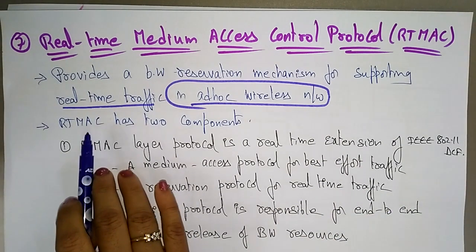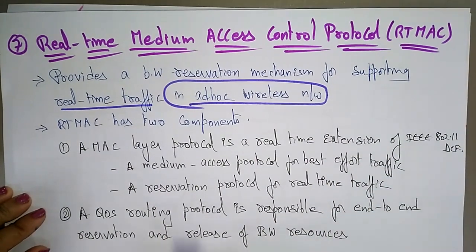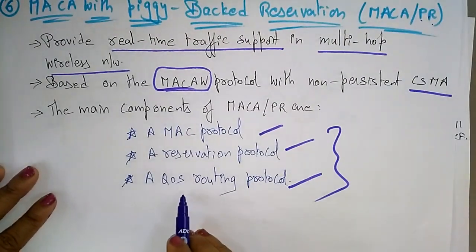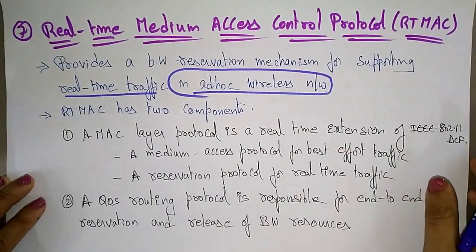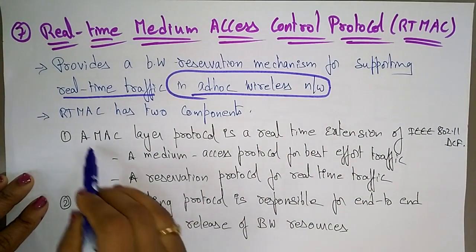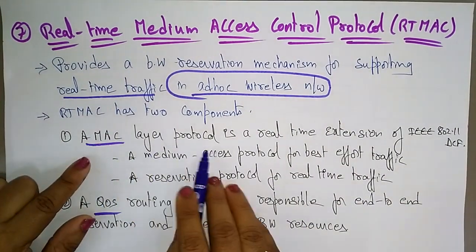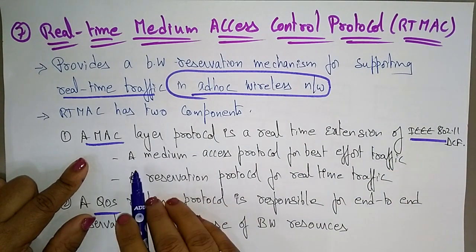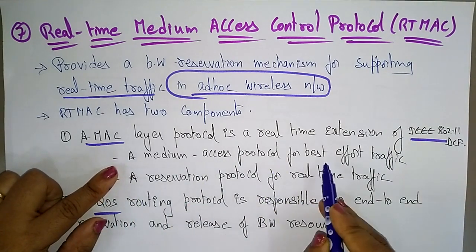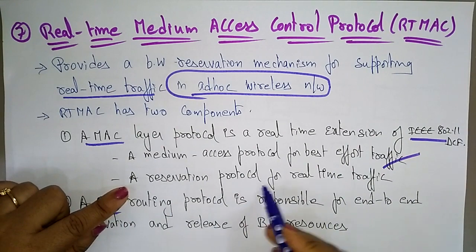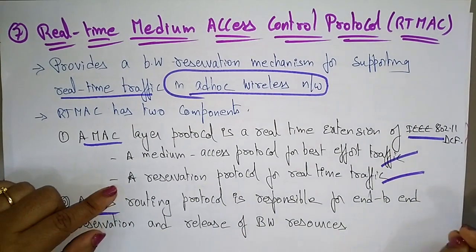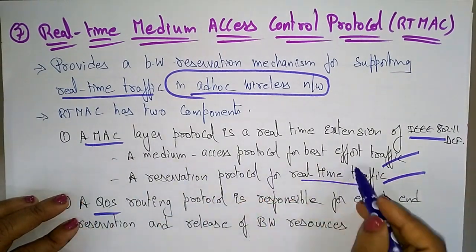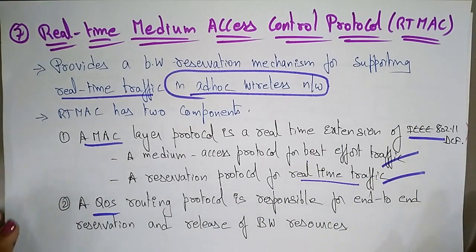RTMAC has mainly two components, whereas MACA-PR has three components: MAC, reservation, and quality of service. In RTMAC, only quality of service and MAC are present. The MAC layer protocol is a real-time extension of IEEE 802.11 DCF. It uses a medium access protocol for best-effort traffic and a reservation protocol for real-time traffic. The medium access protocol is sufficient for best-effort traffic; reservation is used when real-time traffic is needed.